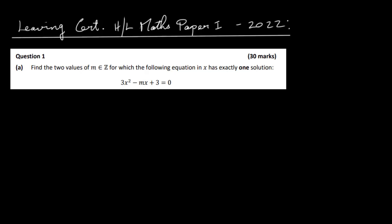In question 1a, it asks us to find two values of m which are elements of z — they're integers — for which the following equation in x has exactly one solution. So we have 3x squared minus mx plus 3 equal to 0, and we want to find two values of m. If it has exactly one solution, then the discriminant must be equal to 0.